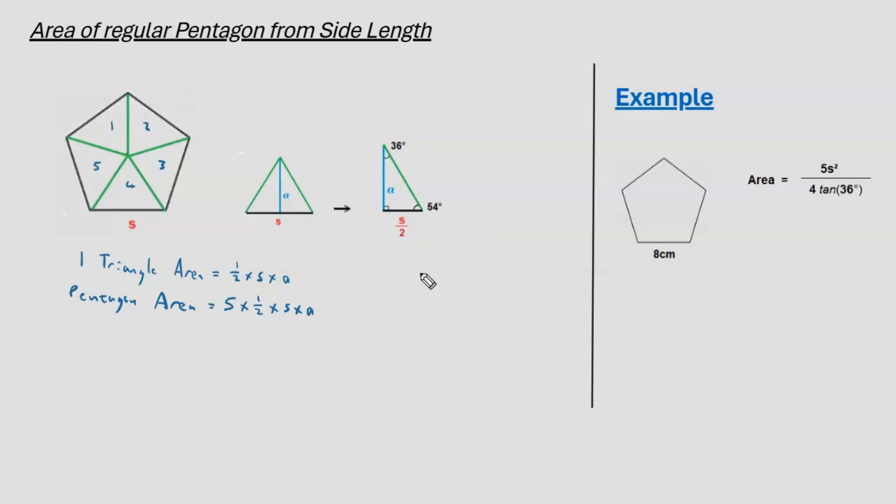Now, for this right angle triangle, if we can remember from trigonometry, SOHCAHTOA tells us that the tan ratio is the opposite side for an angle over the adjacent side. So, if we focus on the angle 36 degrees, the opposite side is S over 2, and the adjacent side is A.